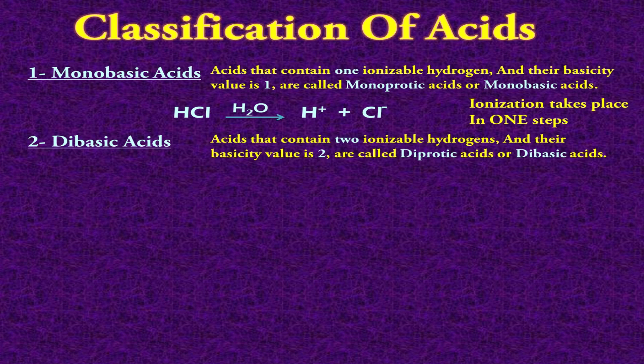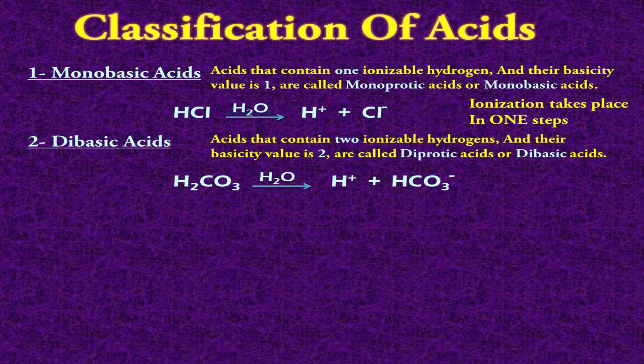The second type is dibasic acid. These acids contain 2 ionizable hydrogen ions and their basicity value is 2, so they are called dibasic acids or diprotic acids. For example, carbonic acid, formula H₂CO₃. When it dissolves in water, there are 2 hydrogen atoms in the formula of carbonic acid.